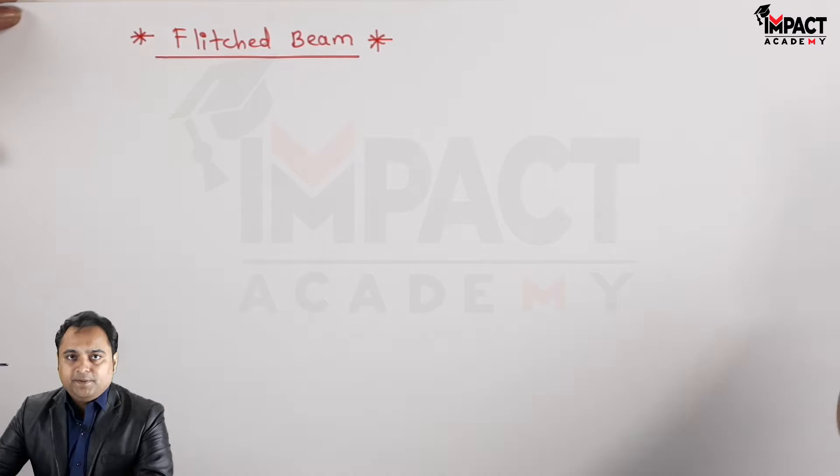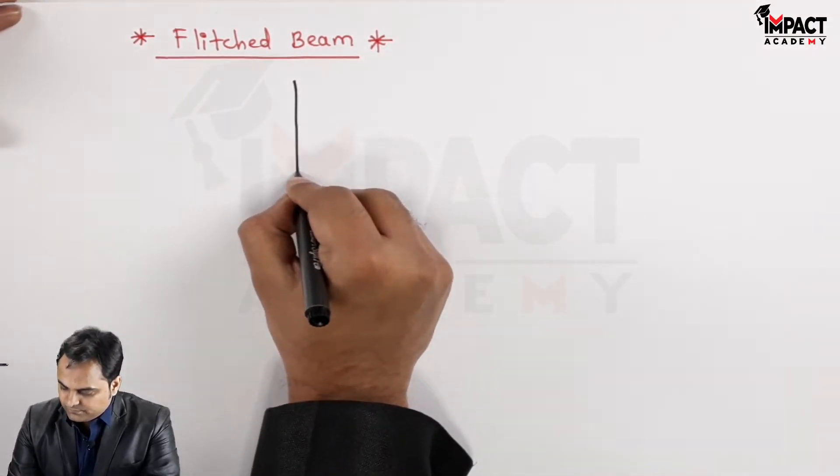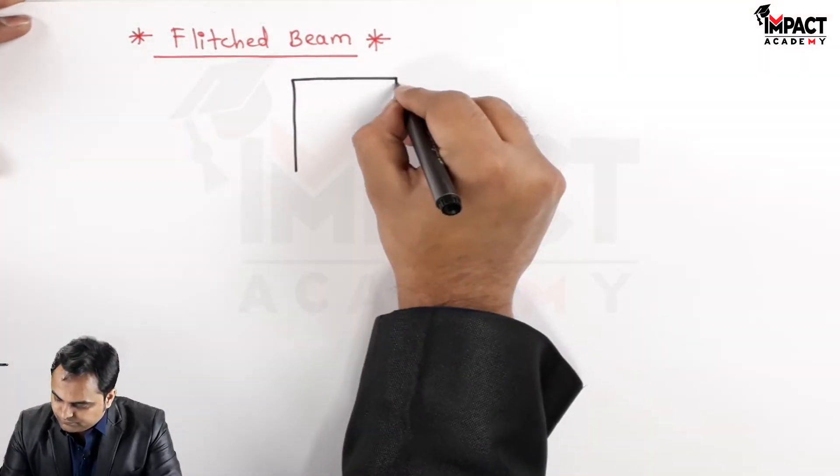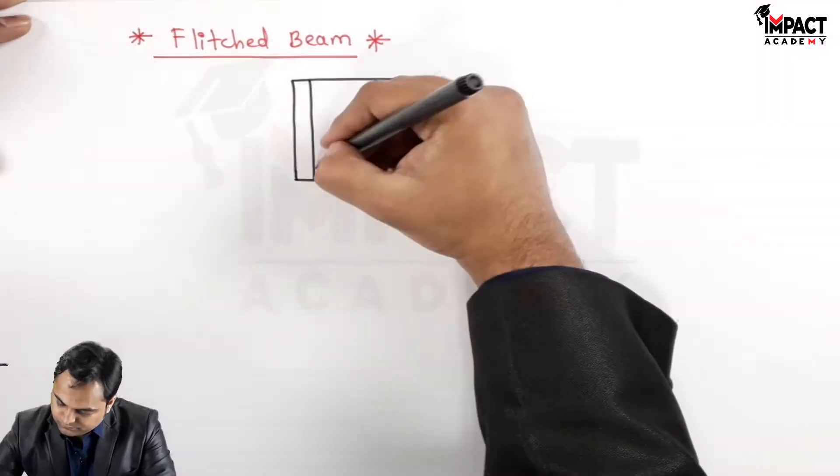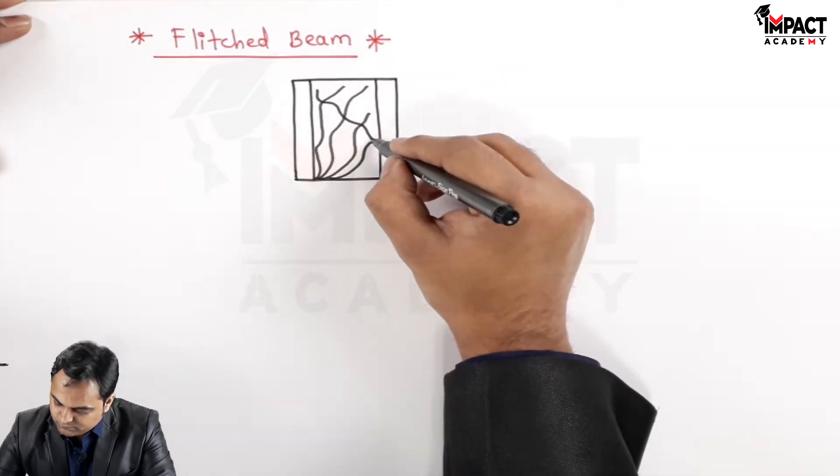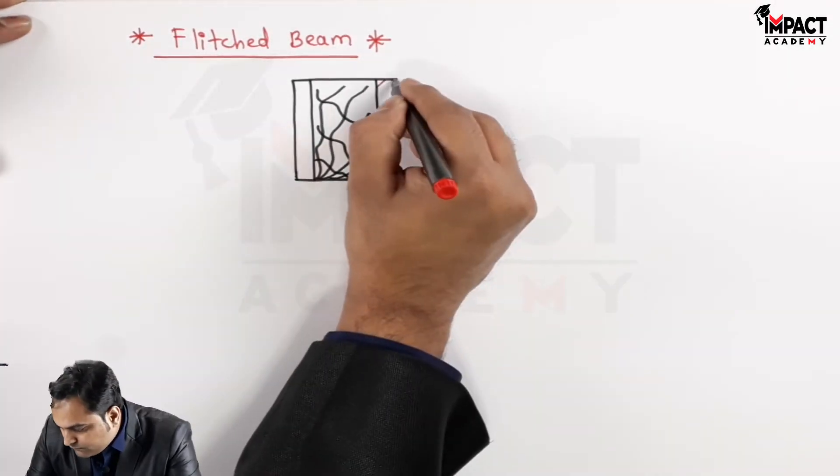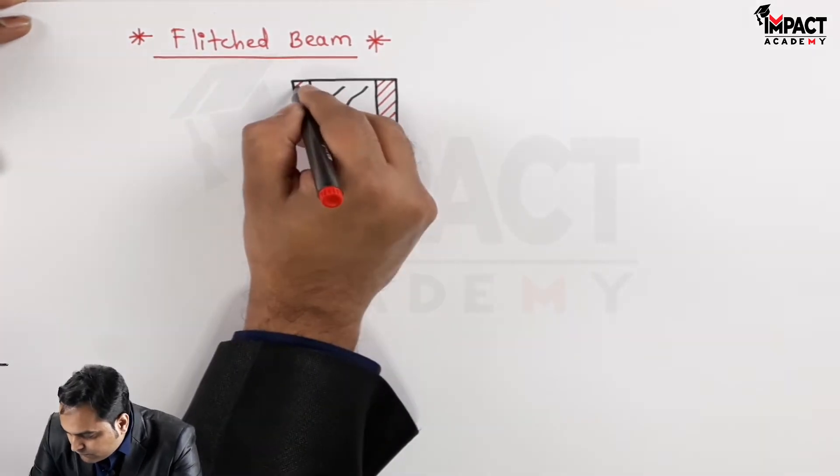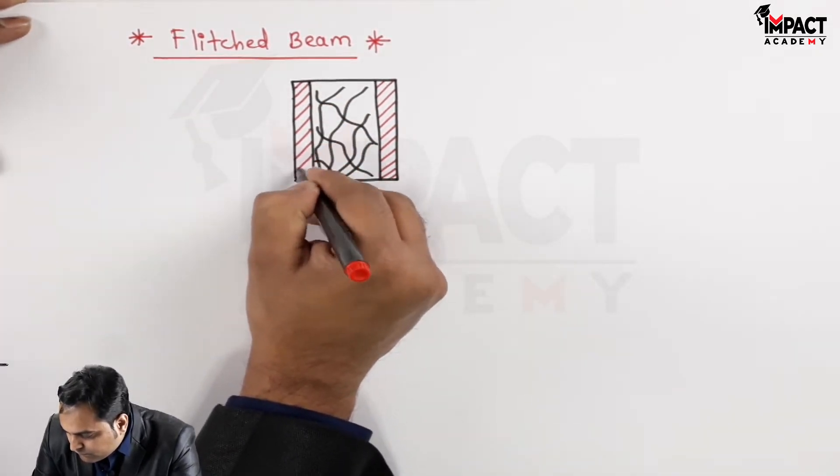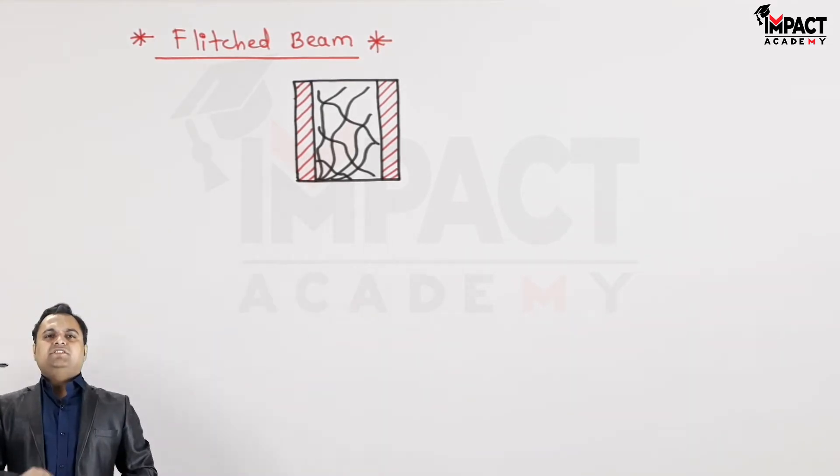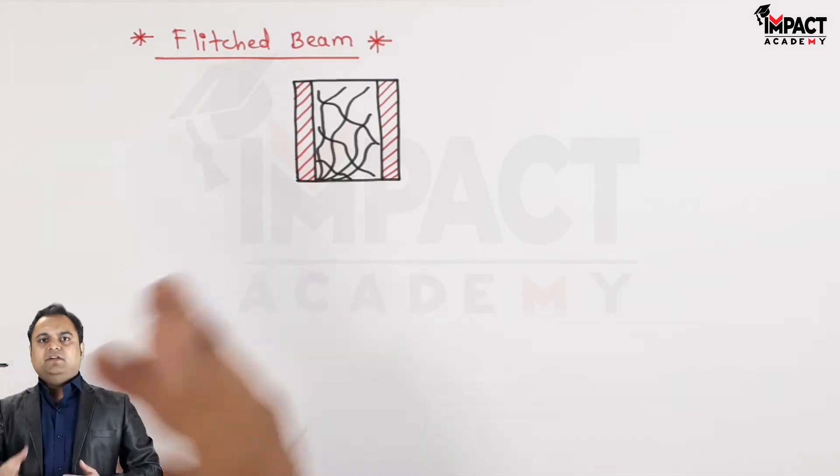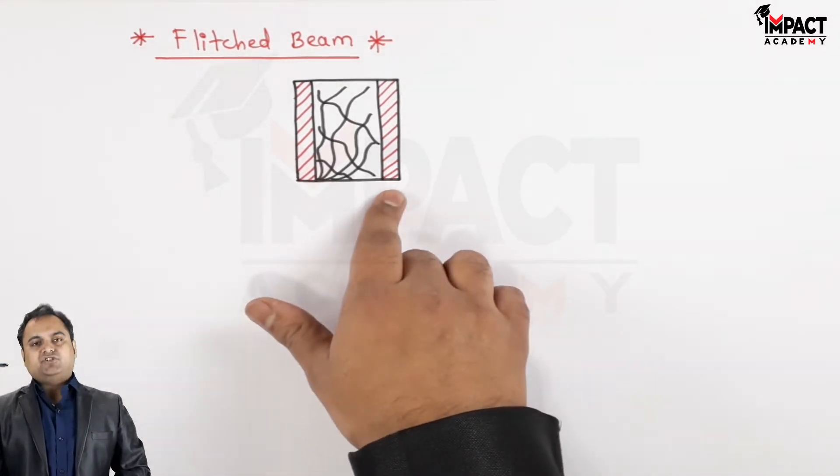I'll first draw the diagram of a flitched beam. So here is a flitched beam, an example. Flitched beam is basically a composite beam, that is a beam made up of two different materials. Like here in the example which I am showing, there is wood and steel.